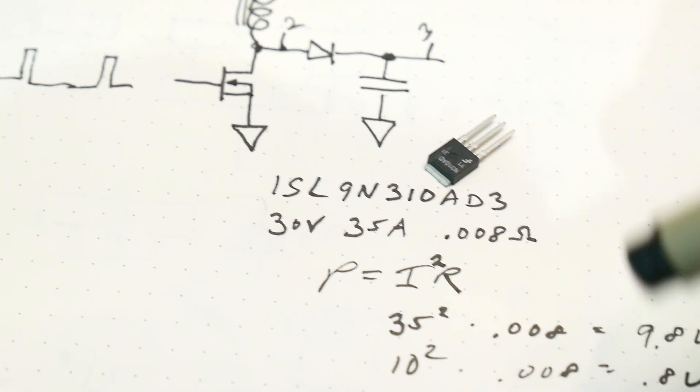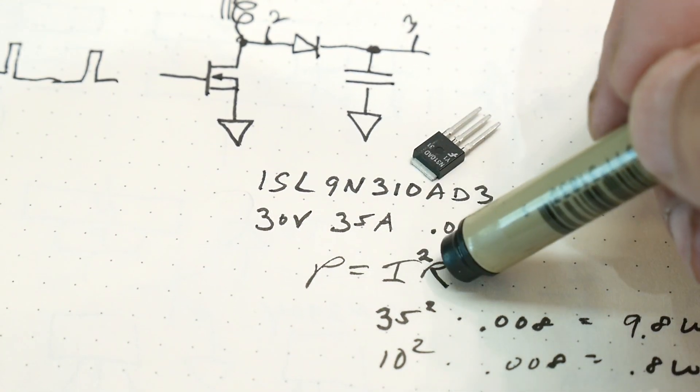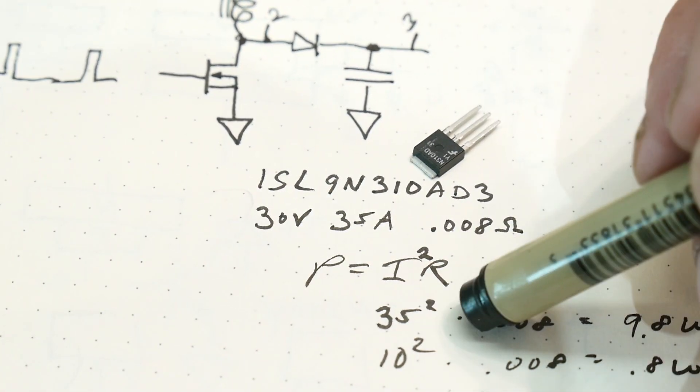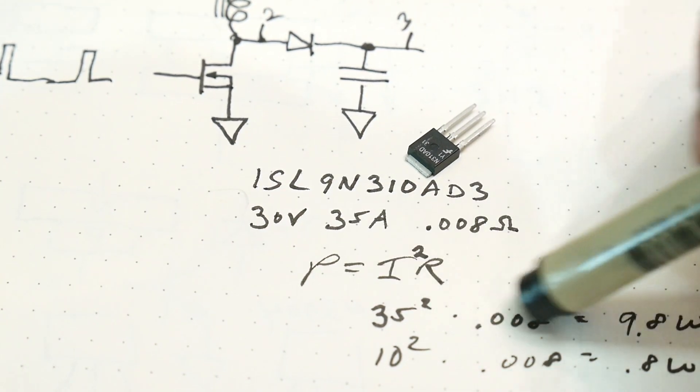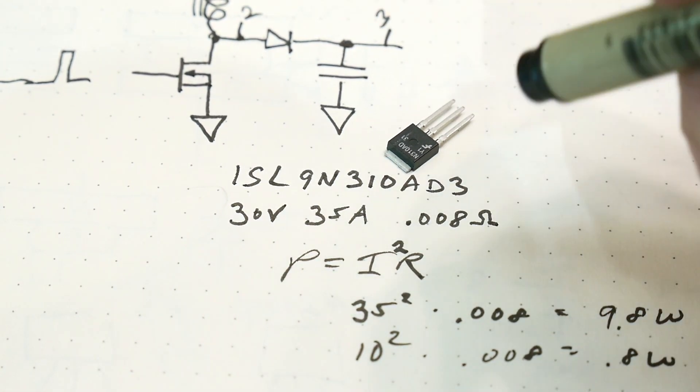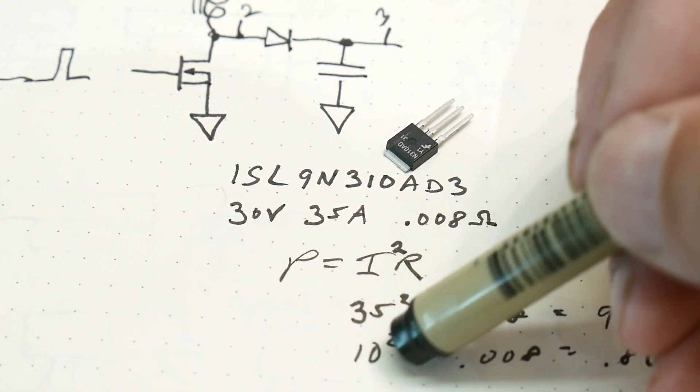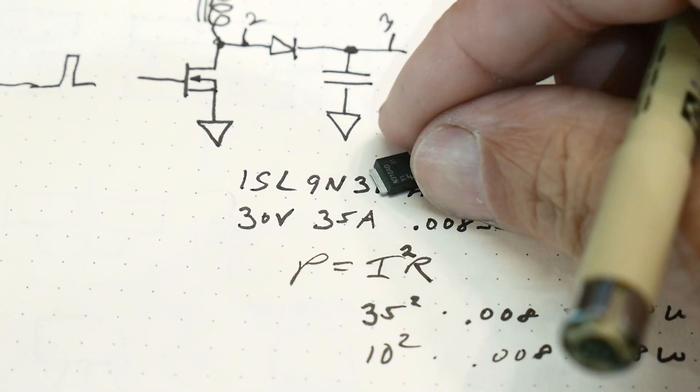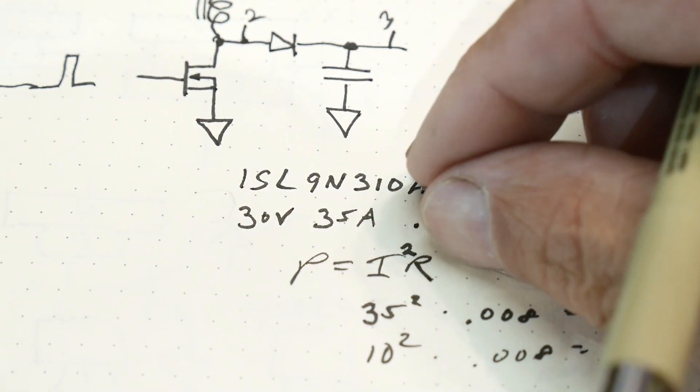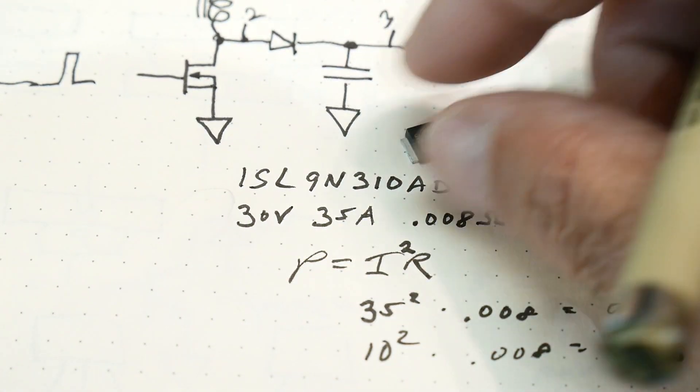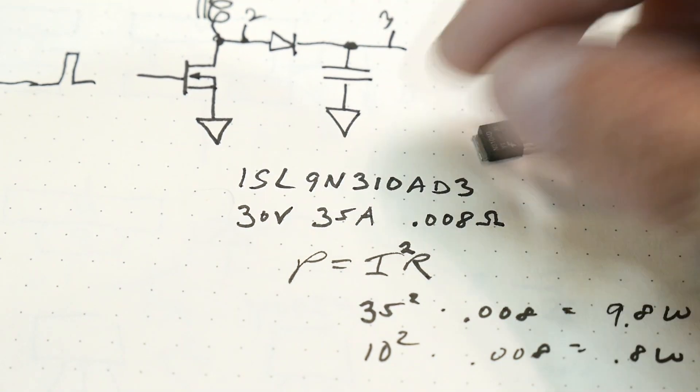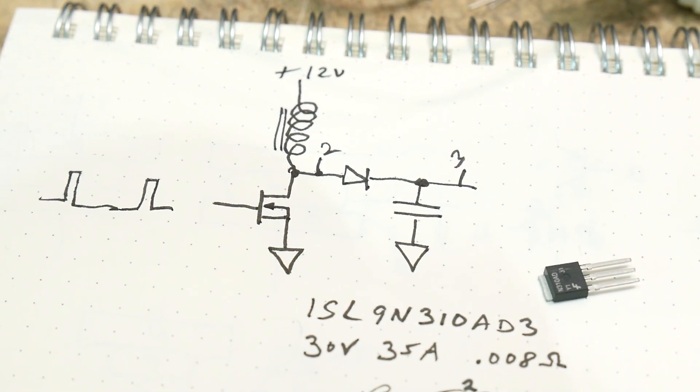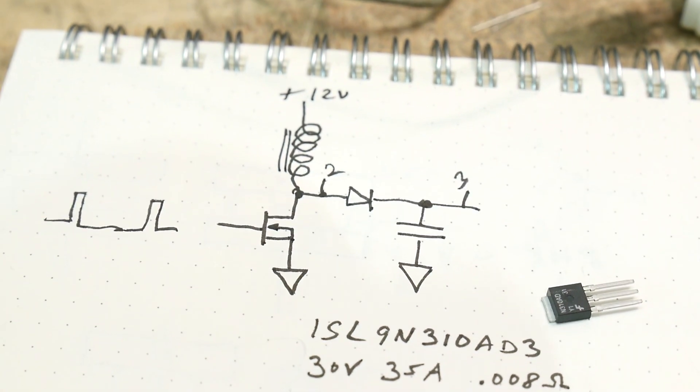And if you do a couple calculations here, power equals I squared R. At 35 amps it can get up to like 10 watts, okay that's too much. But at 10 amps you're only looking at 0.8 watts, right? So this little guy's going to be perfectly fine at 0.8 watts all by itself without a heat sink on it. Pretty amazing. Anyway, I'm certainly not driving that hard, probably an amp or something maybe.